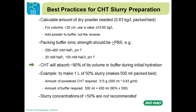In terms of buffer volume, CHT will absorb about 90% of its volume during initial hydration. For example, if you're making one liter of a 50% slurry — which makes about 500 ml of packed bed — you would need 315 grams of CHT and about 950 ml of buffer. We do not recommend slurry concentrations greater than 50%, because above that it begins to resemble oatmeal, making it hard to keep homogeneous, difficult to pump, and it can actually cause damage to CHT particles.